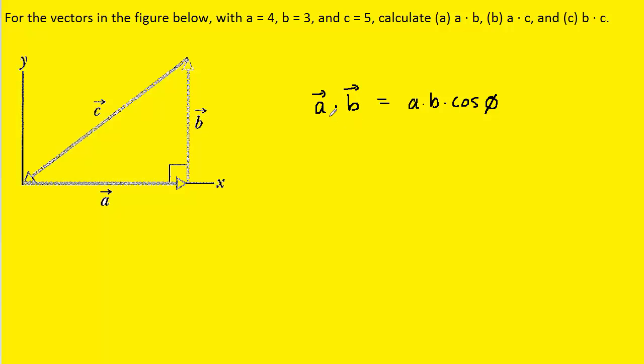Let's take a look at the definition of the dot product. According to the definition, to find the dot product of two vectors, we multiply their magnitudes and then multiply by the cosine of the angle between their directions.